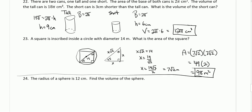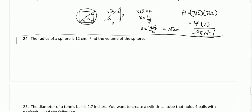Number 24, the radius of a sphere is 12. The volume is four-thirds pi r cubed.